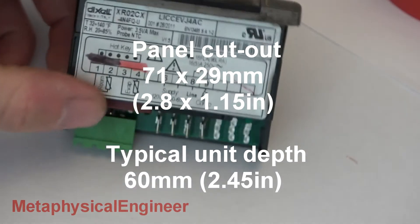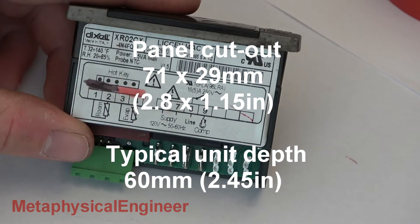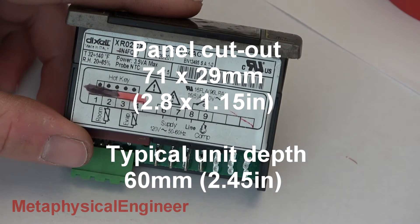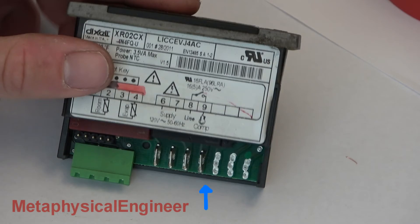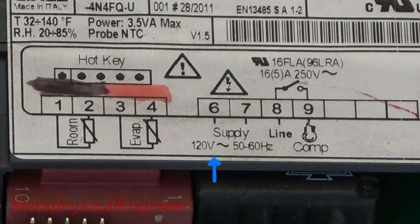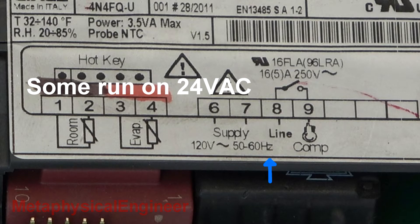They share a similar form factor with differences in overall length as well as number and type of connections and control capability. This one uses spade terminals for the line voltage and screw clamp terminals for the thermistors and low voltage. It's rated for 120 volt single phase supply, though 208, 230 and even dual voltage versions are available.